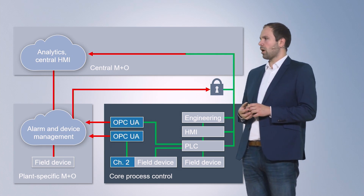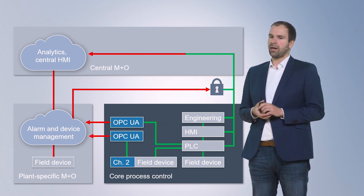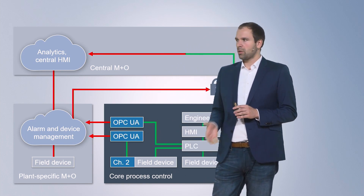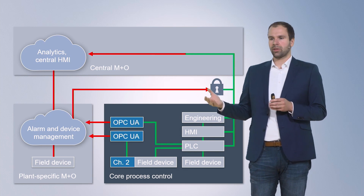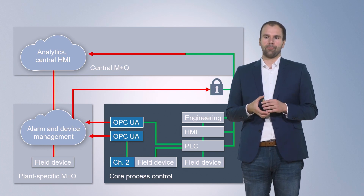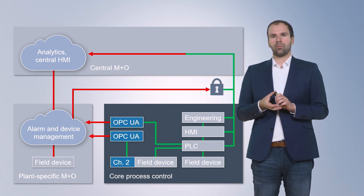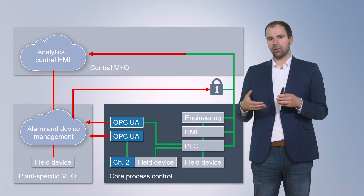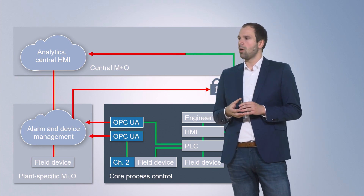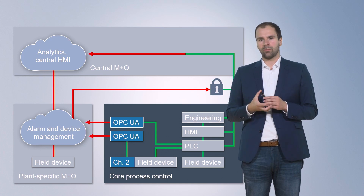Looking at the NOA architecture, all existing infrastructure — the existing DCS system, controllers, and so on — remains untouched. We simply add the NOA Edge device, represented by the blue blocks. The second channel connects to the field device, and we can also grab data from the existing PLC. All of that information is made available through the OPC UA server, which then publishes data for device management or optimization. Higher-level systems can run analytics locally on the plant or in a central MNO system that aggregates data from different locations of the same operator.